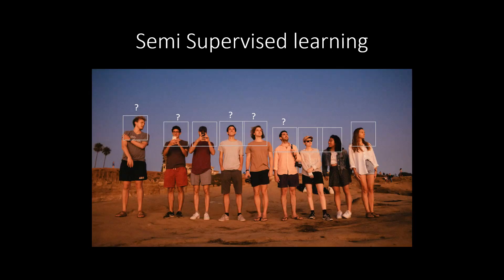In semi-supervised learning, the algorithm classifies on its own to some extent and also needs a small quantity of labeled data. A small quantity of labeled data in conjunction with a large pool of unlabeled data can increase learning accuracy to a great extent.